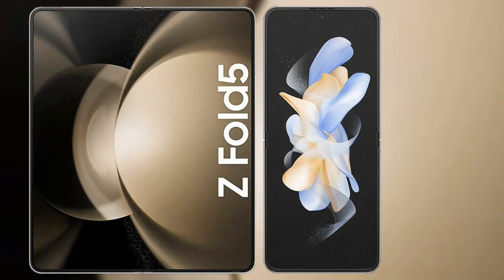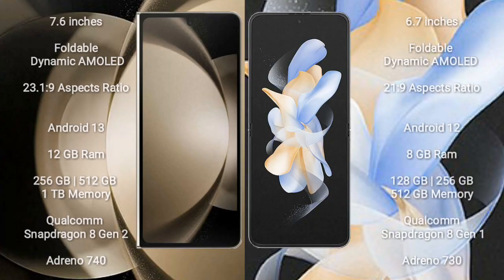Comparing the Samsung Galaxy Z Fold 5 with the Samsung Galaxy Z Flip 4. The Samsung Galaxy Z Fold 5 comes with a 7.6-inch foldable dynamic AMOLED display with a 23.1:9 aspect ratio. The Samsung Galaxy Z Flip 4 comes with a 6.7-inch foldable dynamic AMOLED display with a 21:9 aspect ratio.